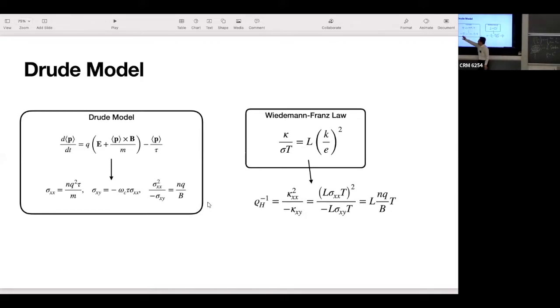This is the transverse, Hall conductivity. You see that sigma_xy is proportional to tau and sigma_xx. But sigma_xx is itself proportional to tau. So this should be proportional to tau squared, the relaxation time squared.